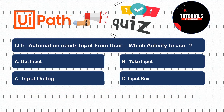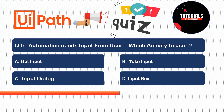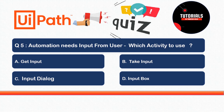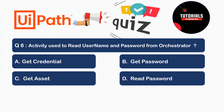Question 5: My automation needs input from the user. Which activity should I use? Options: A) Get Input, B) Take Input, C) Input Dialogue, or D) Input Box. The correct answer is Input Dialogue. This activity shows a pop-up on the screen where you can put a message and label, it asks for input from the user, and stores it in a variable.